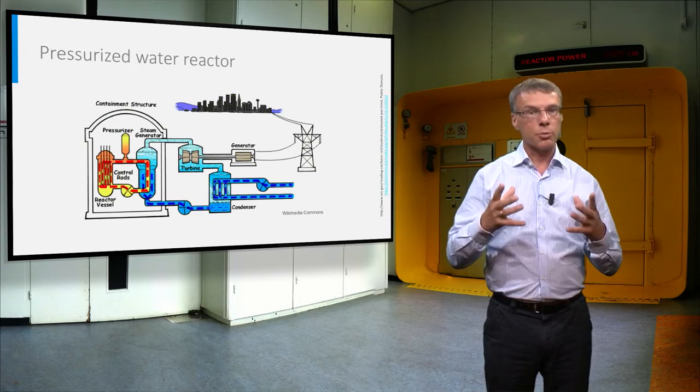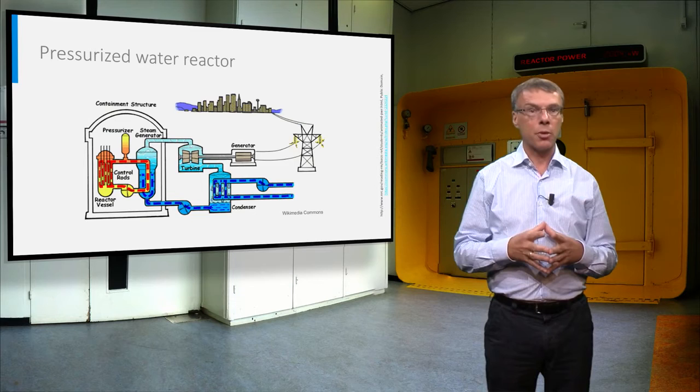On top of the reactor vessel you see the control rods, which contain neutron-absorbing materials and which can be inserted in the reactor core to control the reactor power.